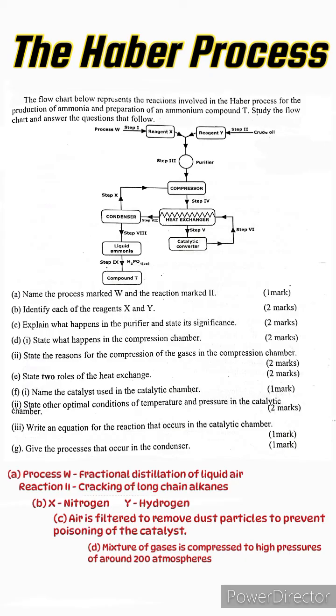Part e: State two roles of the heat exchanger. Role number one of the heat exchanger is that it preheats the incoming gases in order to attain optimum temperatures for the reaction in the catalytic chamber. Role number two is that it cools the ammonia formed in the catalytic chamber. Now I want to say this: in case you're finding this a little bit confusing, please refer to my video where I discuss this in details.